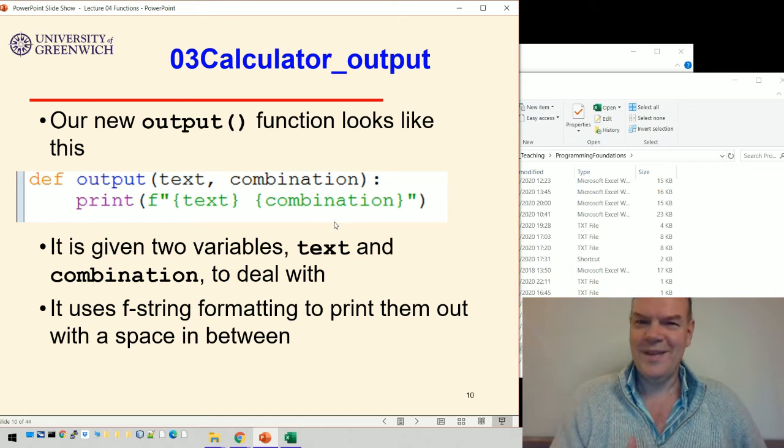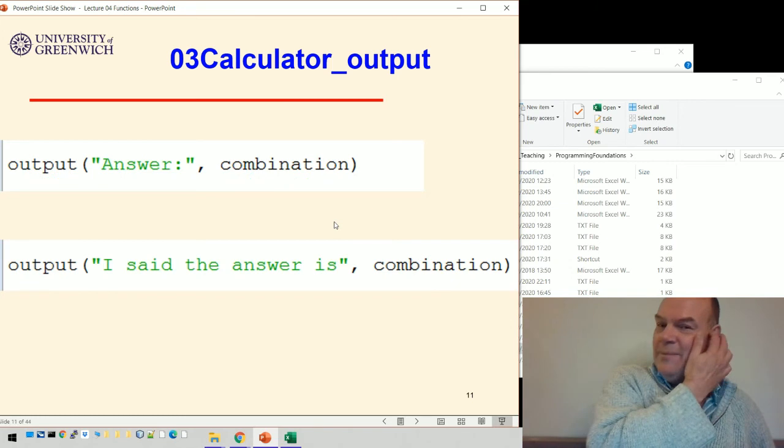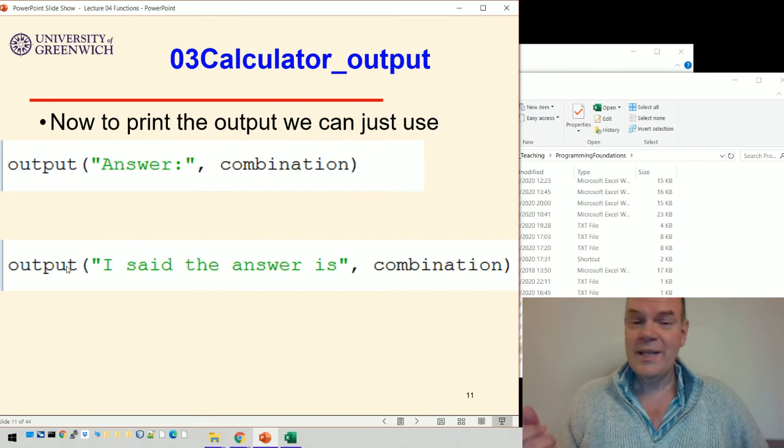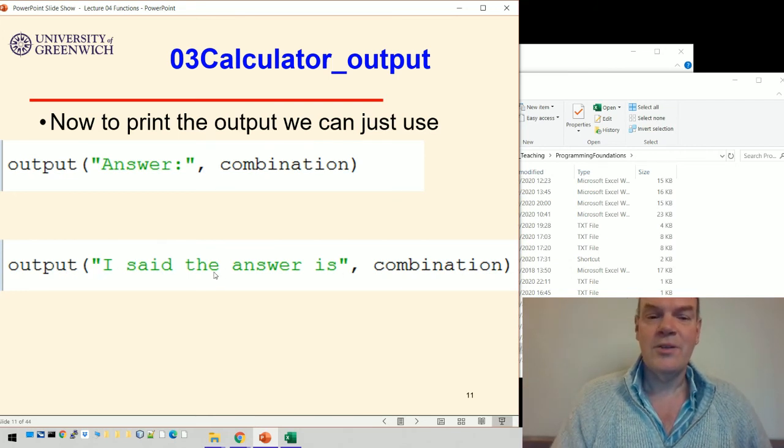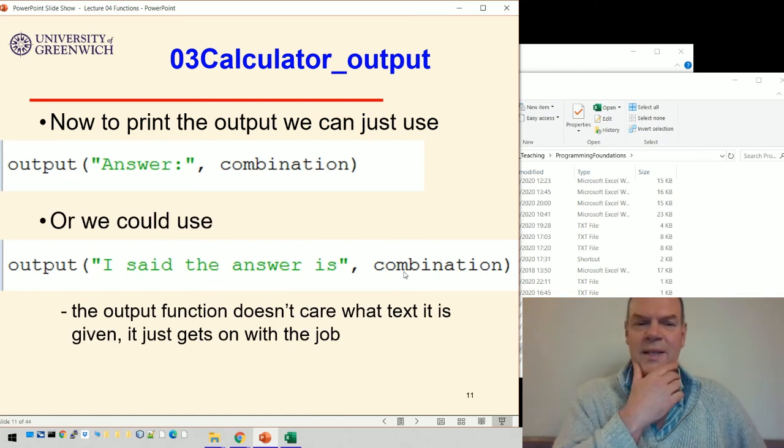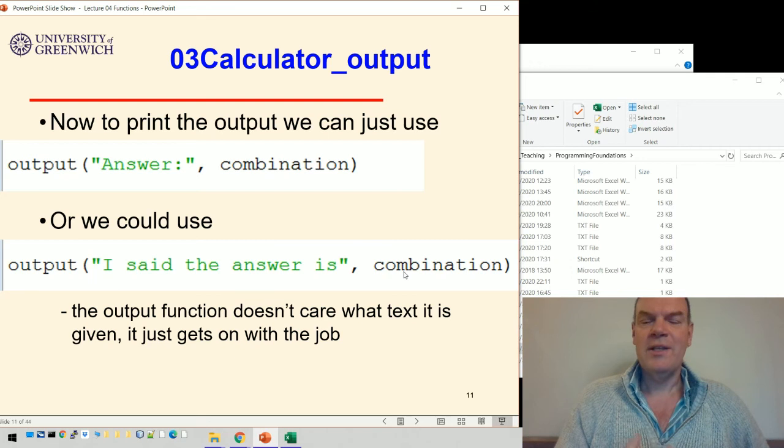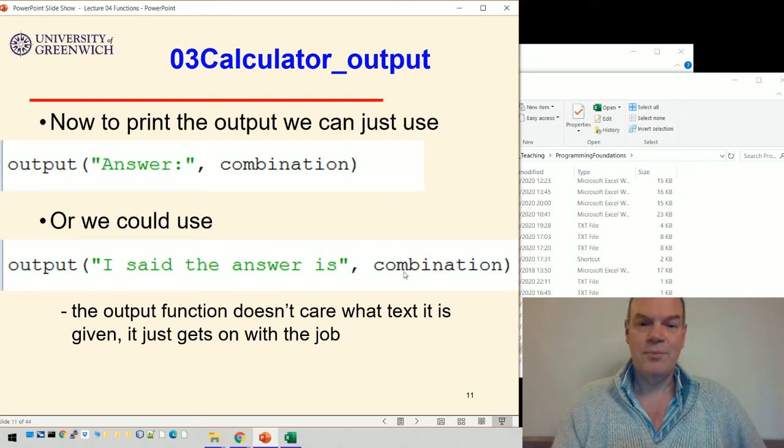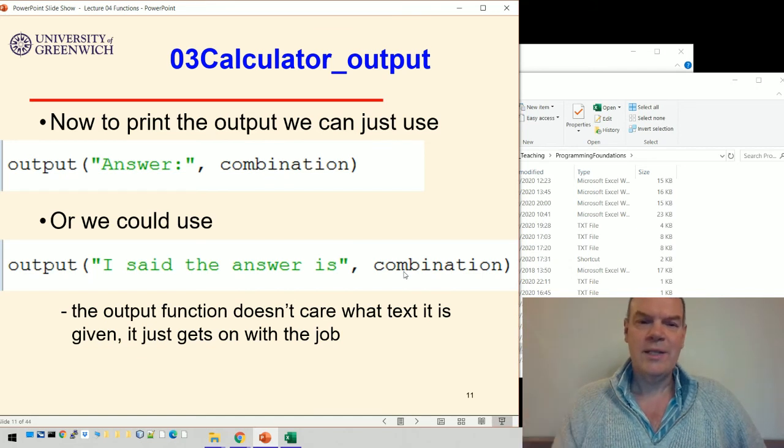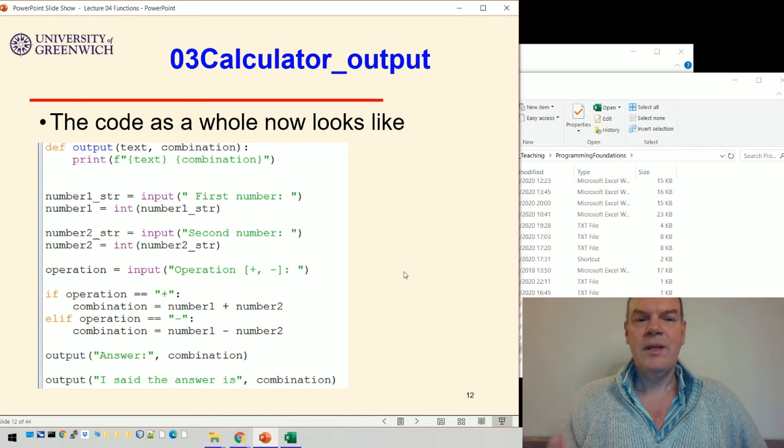If we go back to our original example, we can just use output with answer and combination. But it doesn't have to be answer, it can be whatever we want to pass in as the string. The output function doesn't really care what text is given, it just gets on with the job, which is to print out those two things formatted with a space in between.